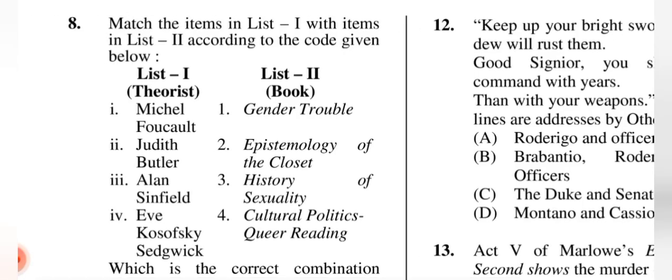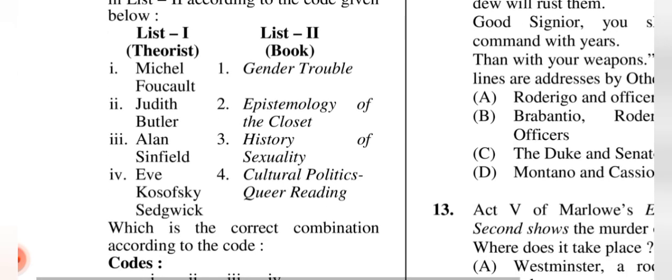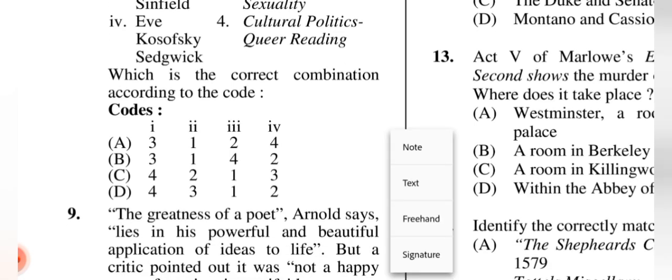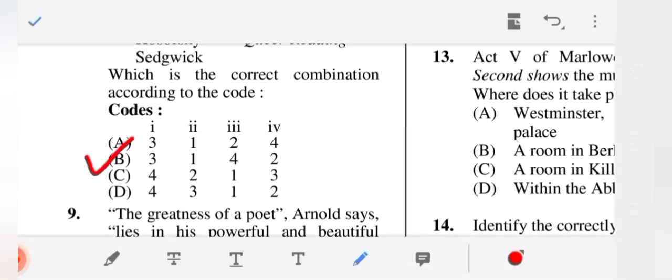Question 8: Match theorists with texts — Michel Foucault, Judith Butler, Alan Sinfield, Eve Kosofsky Sedgwick — with 'Gender Trouble,' 'Epistemology of the Closet,' 'History of Sexuality,' 'Cultural Politics of Queer Reading.' The correct answer is (B): one relates to three, two to one, three to four, four to two.